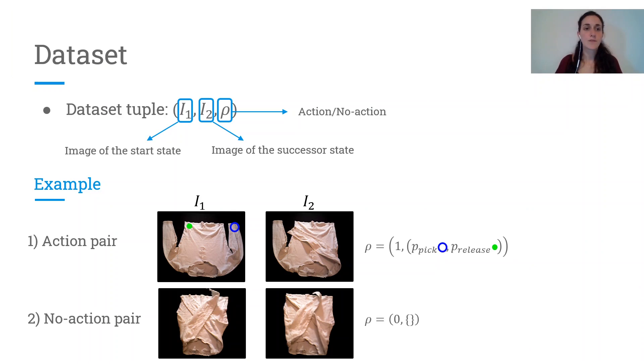So our approach relies on a dataset composed of the following tuples, where the first element of the tuple is the image of the start state, then we have the image of the successor state, and then we have the information of whether there is an action or a no action between these states.